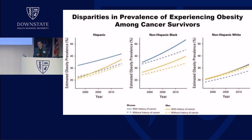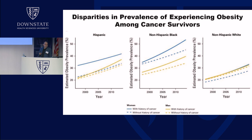Looking at this by race and ethnicity, the blue lines are women, the yellow lines are men, dotted lines are without a history of cancer, and solid lines are with. Amongst Hispanics, the lines are roughly parallel. Amongst African Americans, we see this real movement away from parallel lines — the prevalence of obesity is accelerating amongst survivors. Amongst non-Hispanic whites, the lines are basically parallel. It's amongst non-Hispanic Blacks where we see this disparity growing between the prevalence of obesity among survivors versus those without a history of cancer.